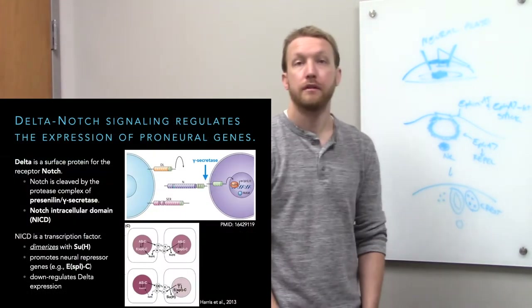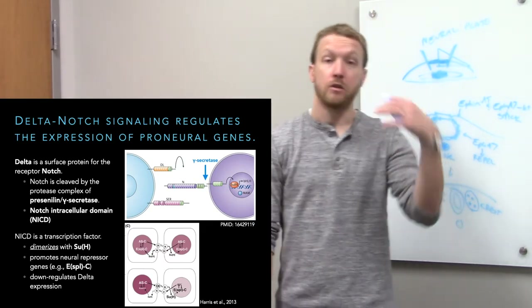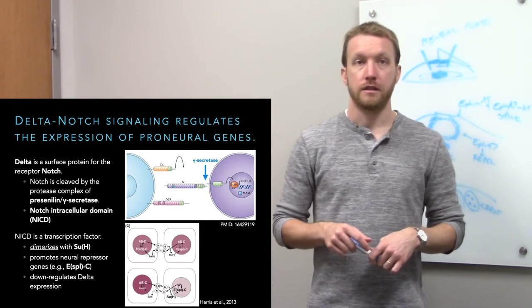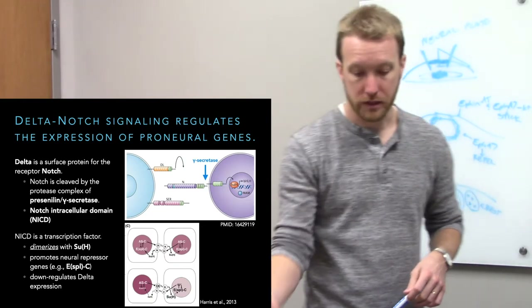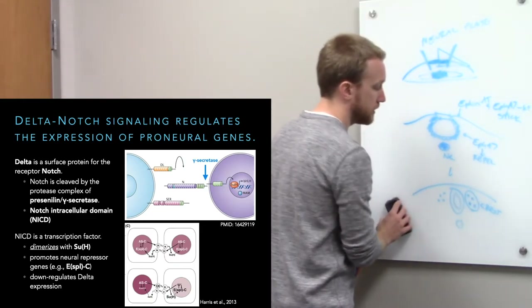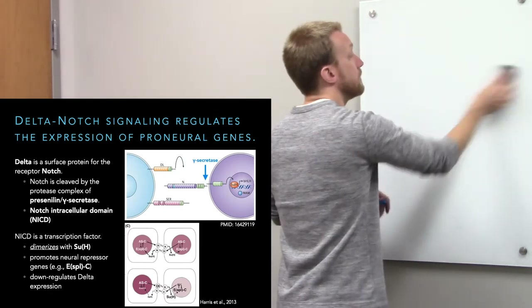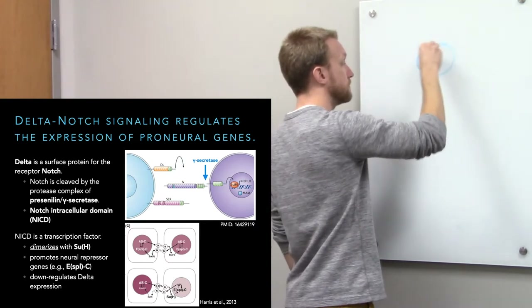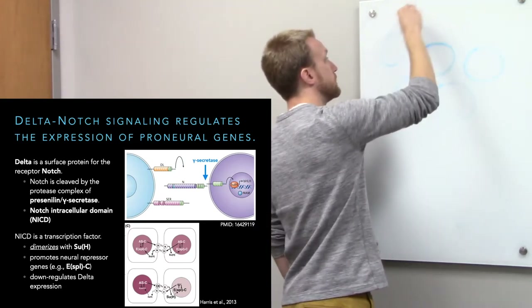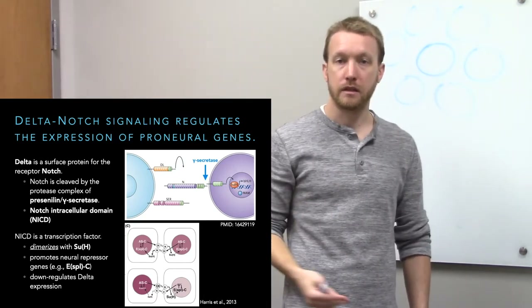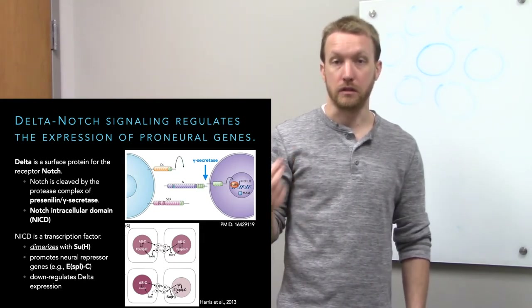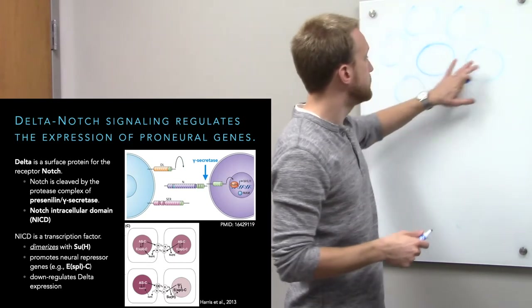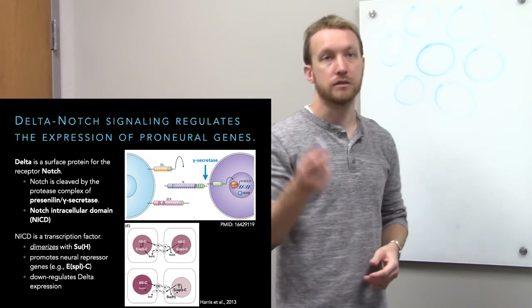Within the neural tube, we need to determine which cells become neurons — and this comes down to delta-notch signaling. Delta is the ligand, Notch is the receptor. Because we can't have a brain full of only neurons, we don't want every cell to become one. Instead, we pick one lucky winner. Some cells must form glia, others epithelia.